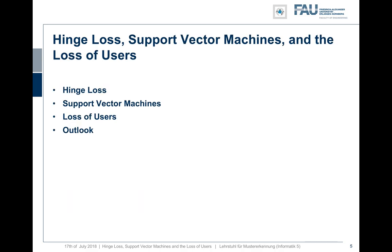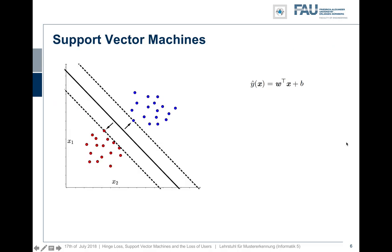Now let's relate this to the concept of support vector machines. Support vector machines are a classical method from traditional machine learning. The idea is to classify between two classes by finding the so-called optimally separating hyperplane. Consider the example on the left: we have two classes shown as blue dots and red dots, and we want to determine the decision boundary that separates them optimally by maximizing the margin between the two classes, indicated by the dashed lines.